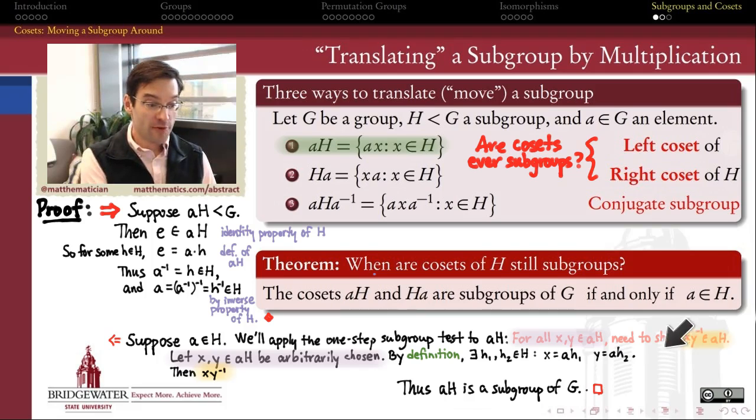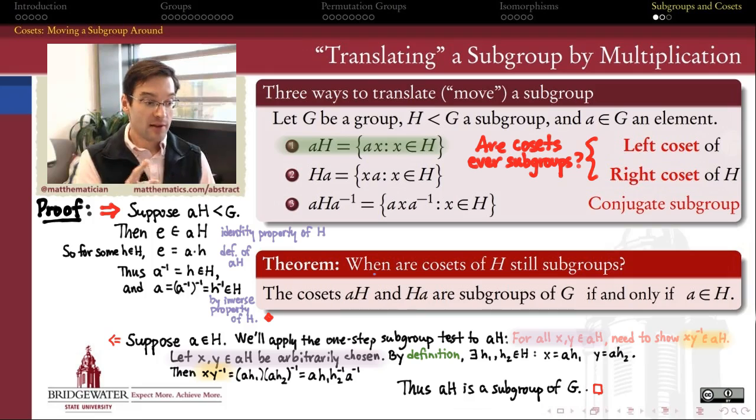So now, to meet my burden of proof, I need to be able to say something about the product X times Y inverse. Now that I know that X and Y have this form, let's just apply that form to the expression XY inverse. It's going to be quantity AH inverse, sorry, quantity AH1 times the quantity AH2 inverse. Hitting that with the shoes and socks principle, that's A times H1 times the inverse of H2 times the inverse of A.